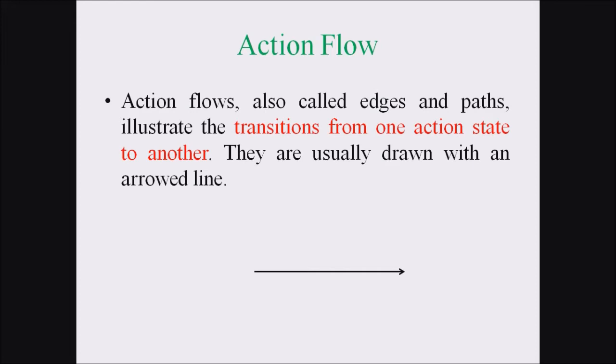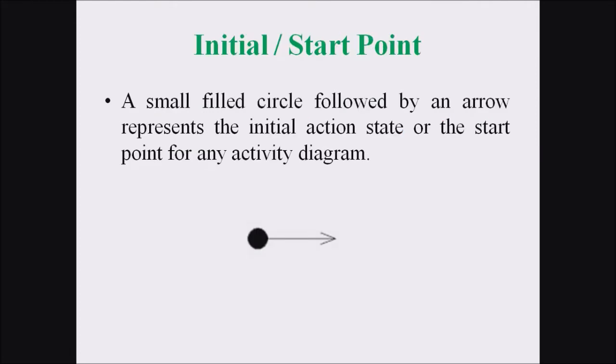The third notation is the initial or starting state. A small filled circle followed by an arrow represents the initial state or starting point of an activity diagram. Let us now consider our ATM transaction example, starting from the starting state.